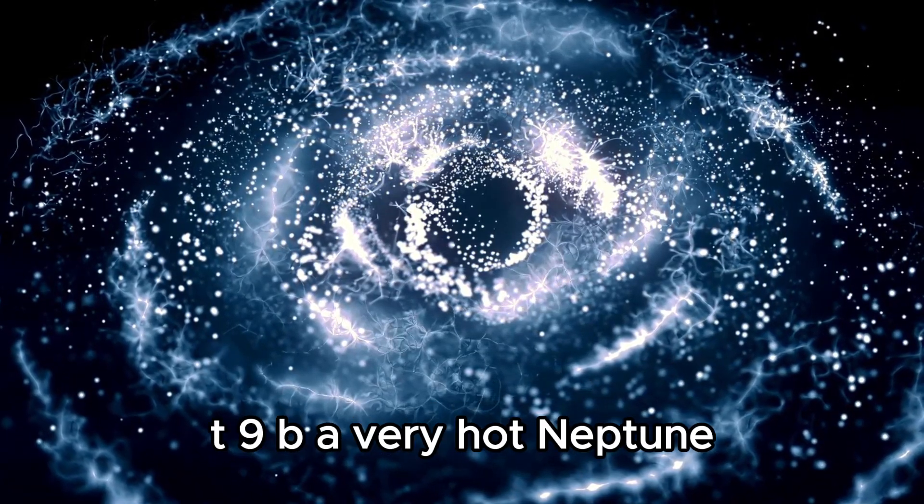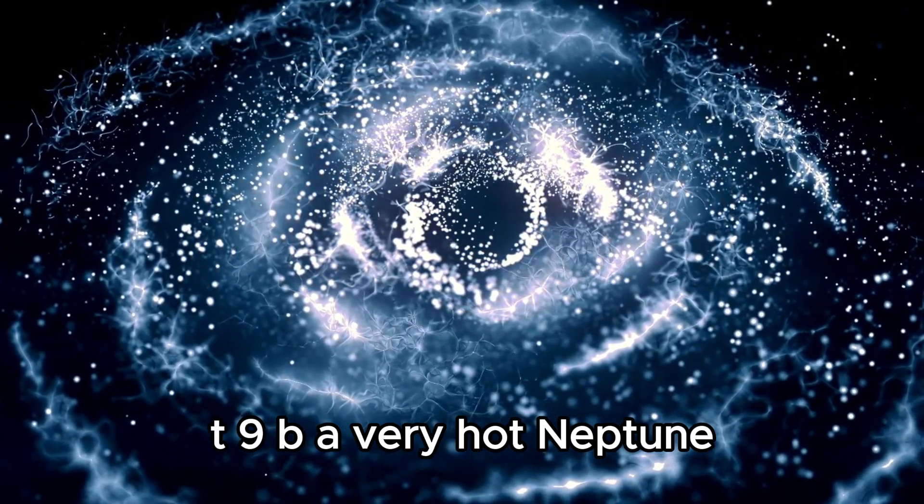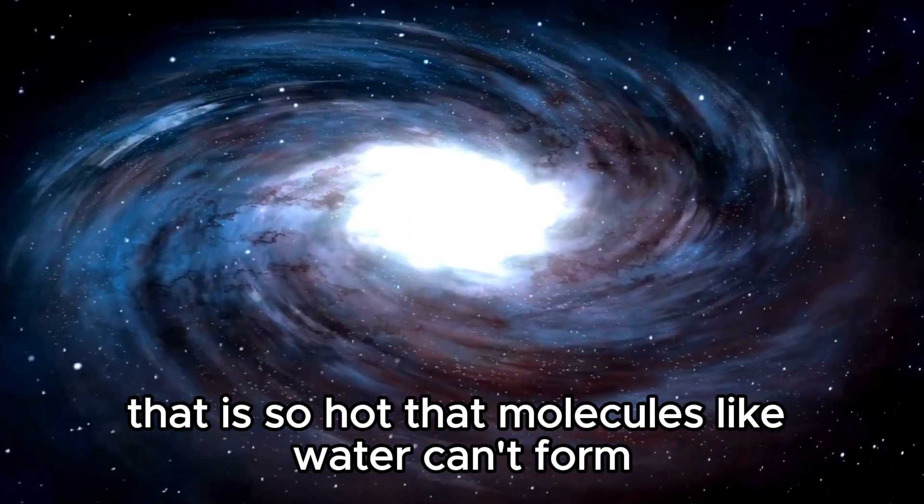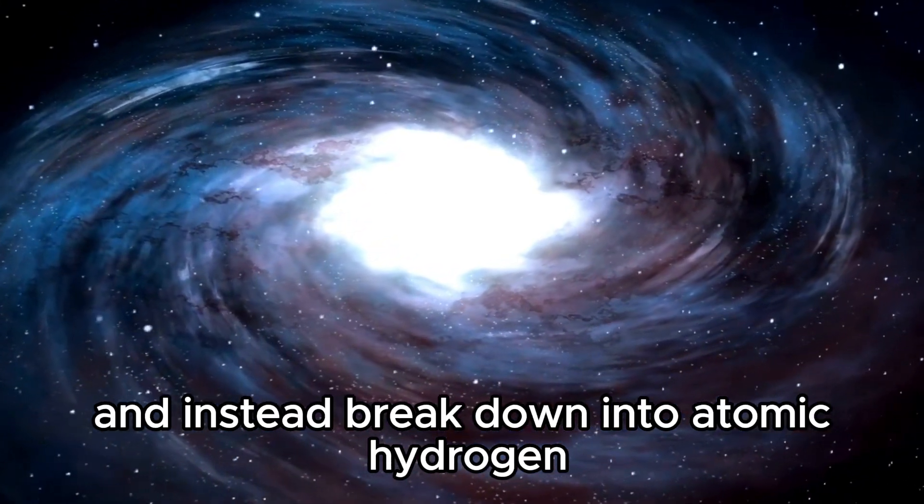Take, for example, KELT-9b, a very hot Neptune that is so hot that molecules like water can't form and instead break down into atomic hydrogen.